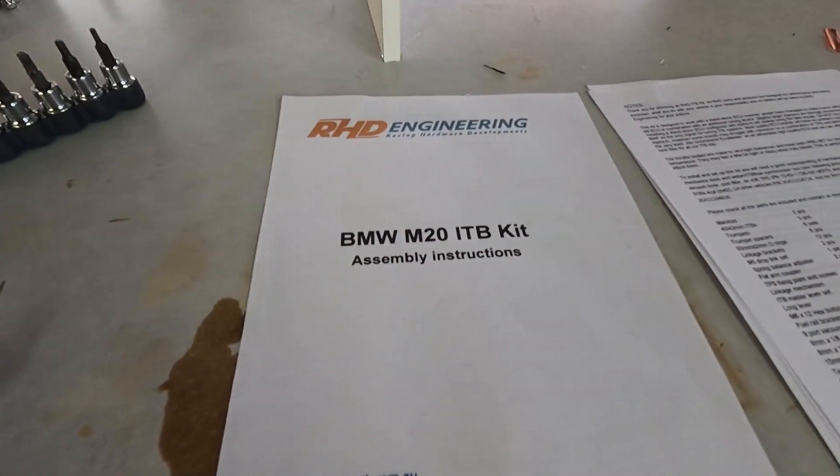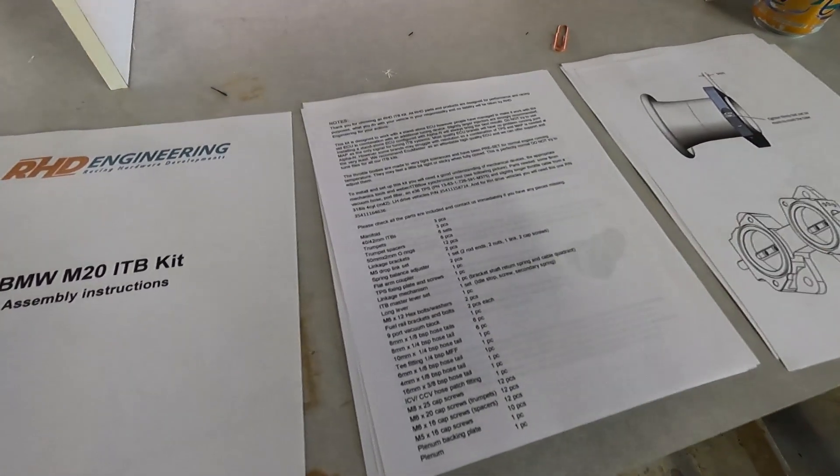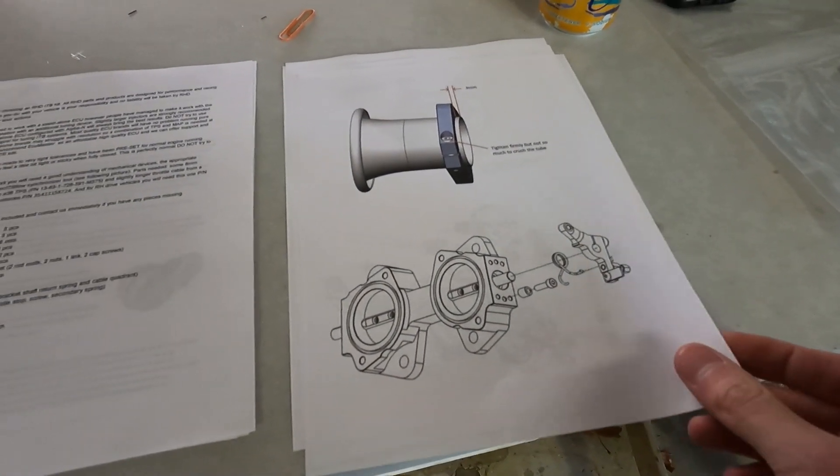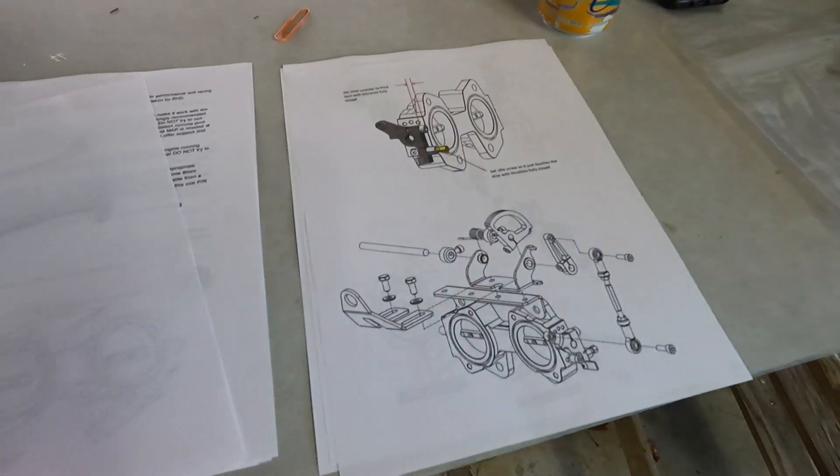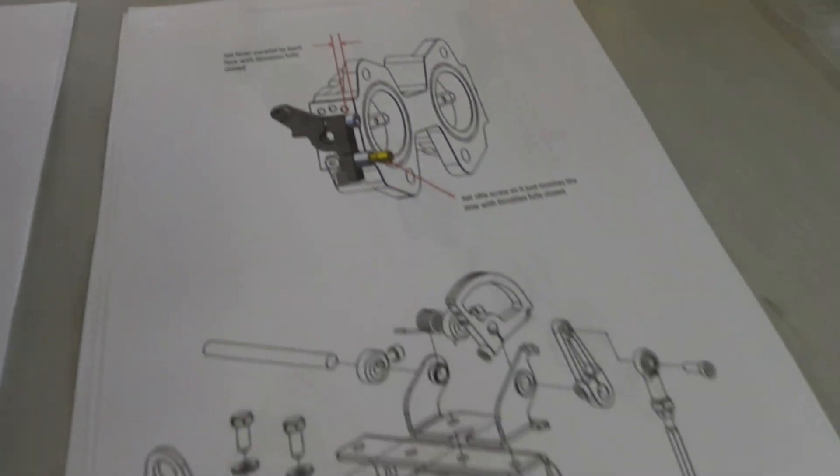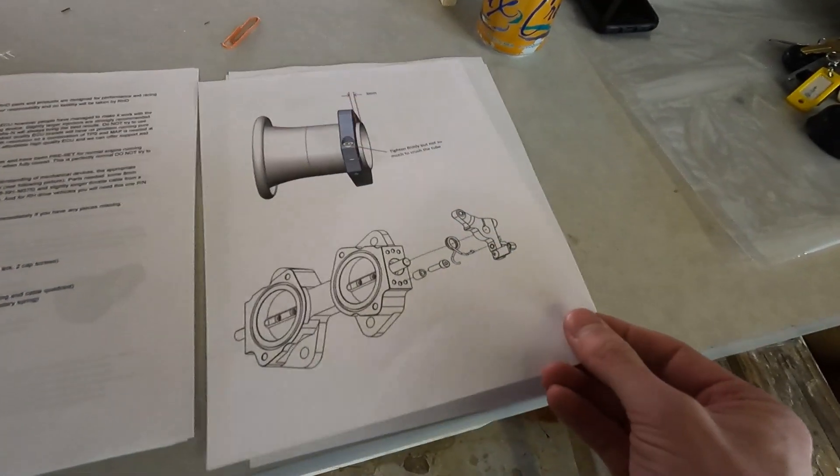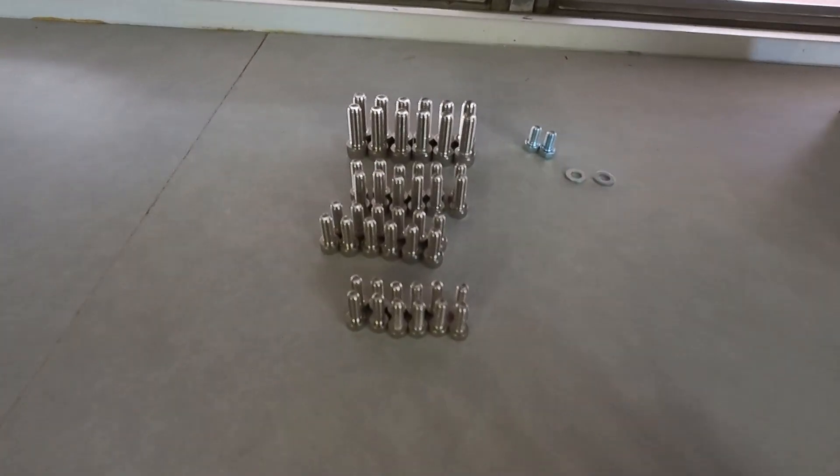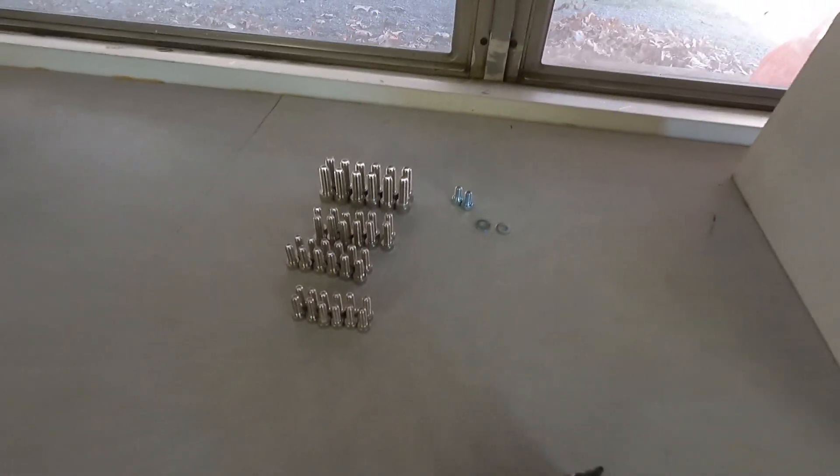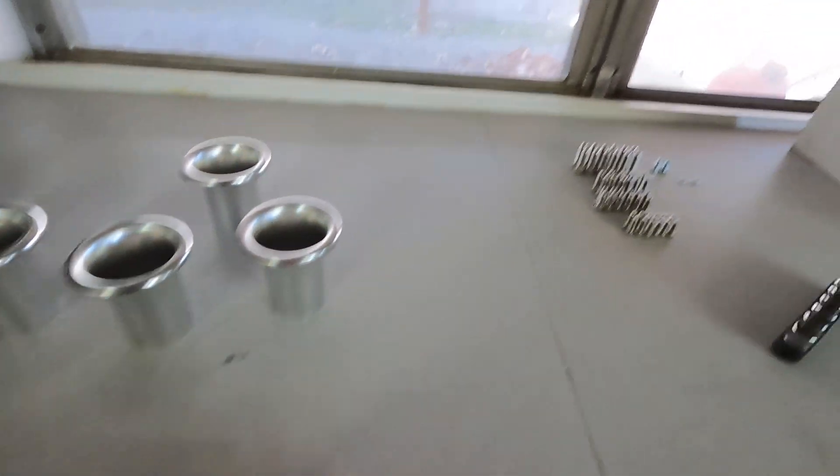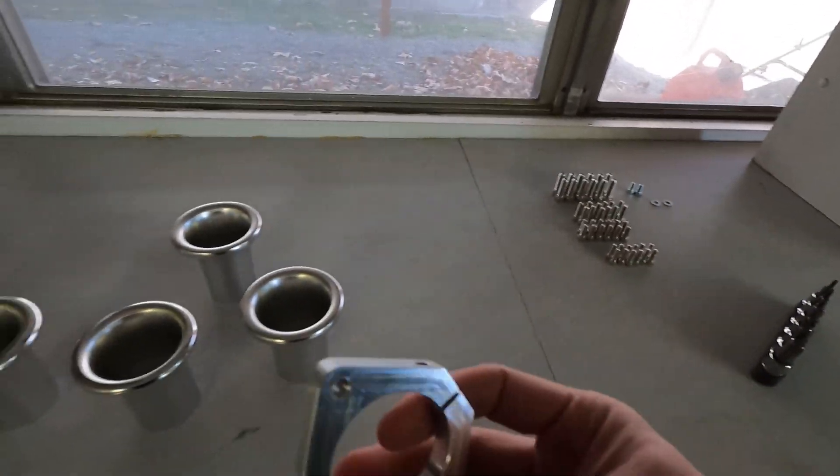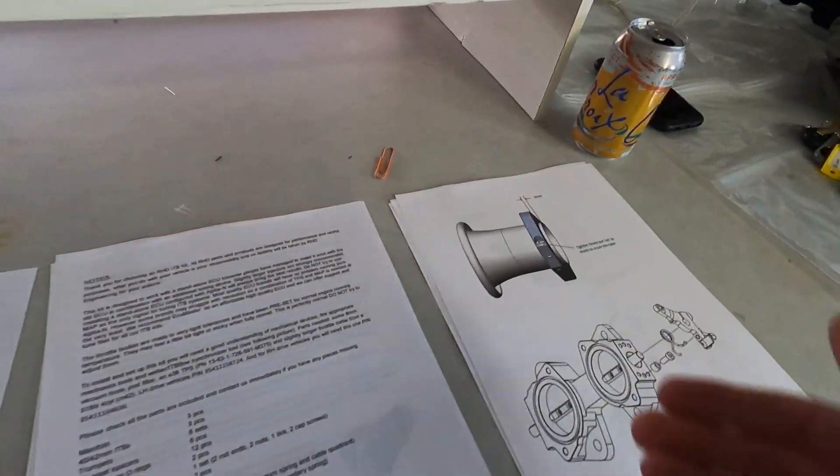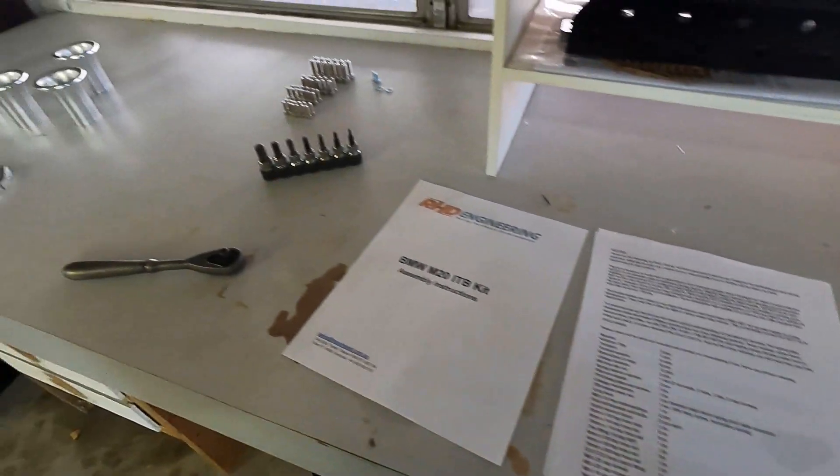Luckily the ITBs do come with instructions. It has a list of all the parts that come in the kit. And then basically the instructions are just photos of it. So there's a short little paragraph about it, but then it's just photos. So for visual learners, I guess it's good, but I guess matching the hardware might be a little iffy. So I've laid out all of the bolts that they gave us and I'm just going to go through it. They're all different sizes, so hopefully that does narrow it down, like what goes where.